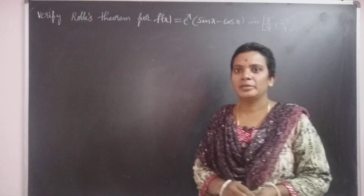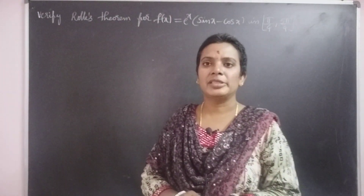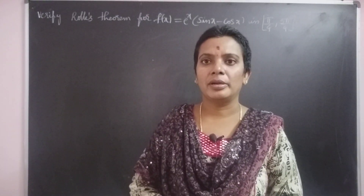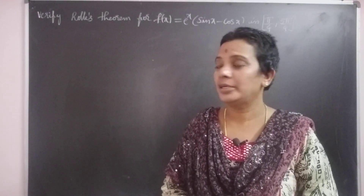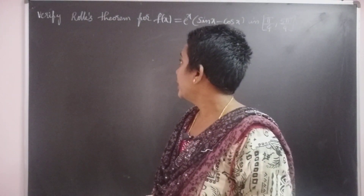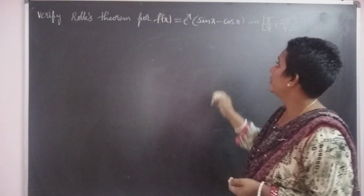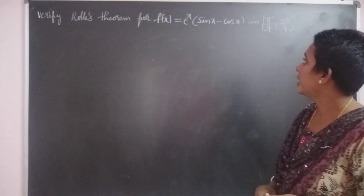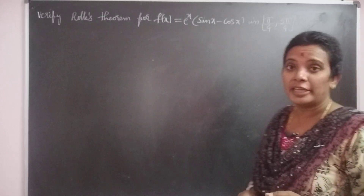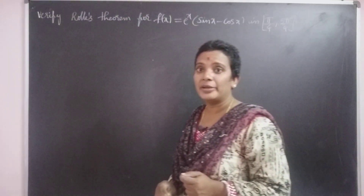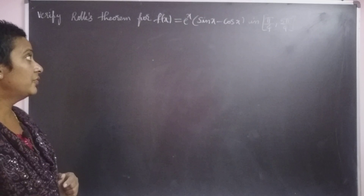Good morning everyone. I would like to discuss a problem on mean value theorems. Verify Rolle's theorem for f of x equal to e to the power x into sin x minus cos x in the interval pi by 4 comma 5 pi by 4.